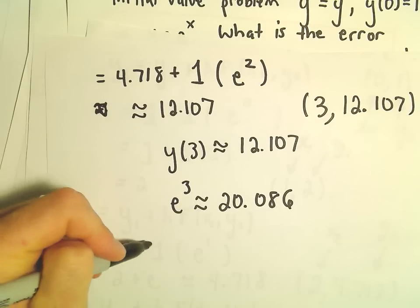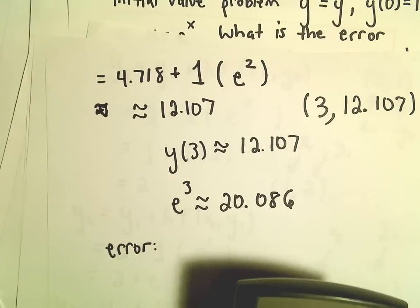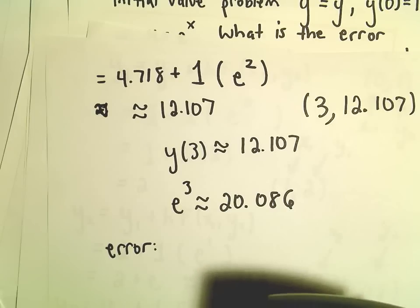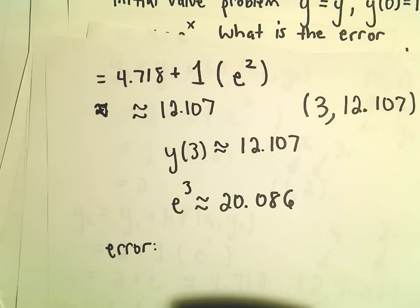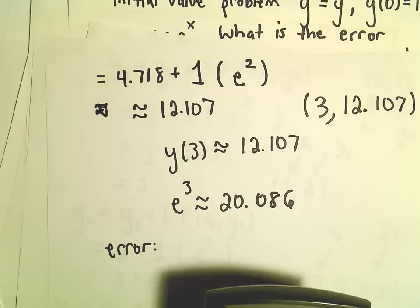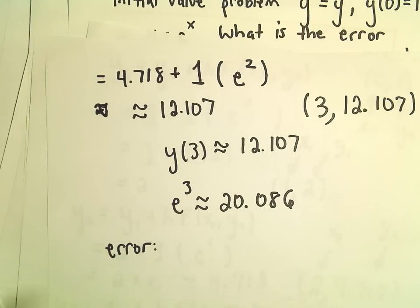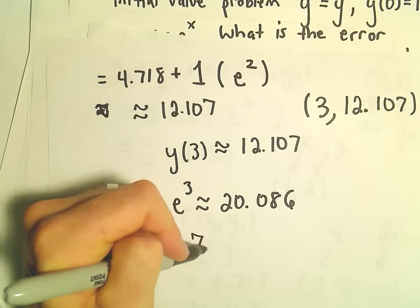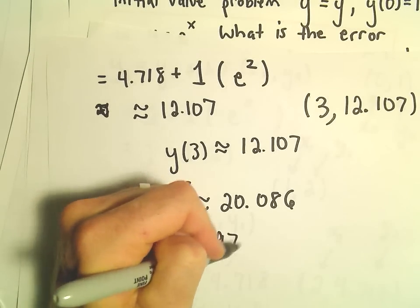So in this case, our error—again, if we approximate 20.086 minus 12.107—I'm getting the error to be approximately 7.979.